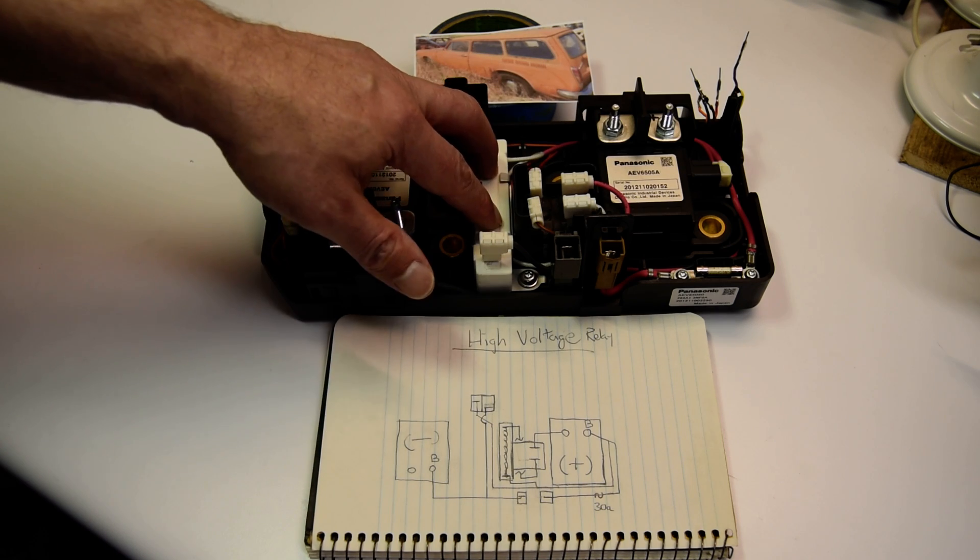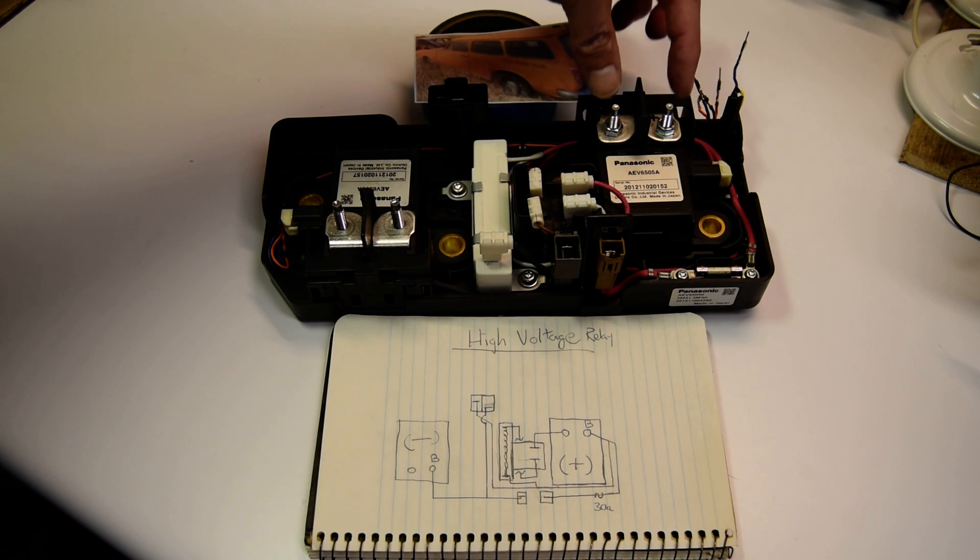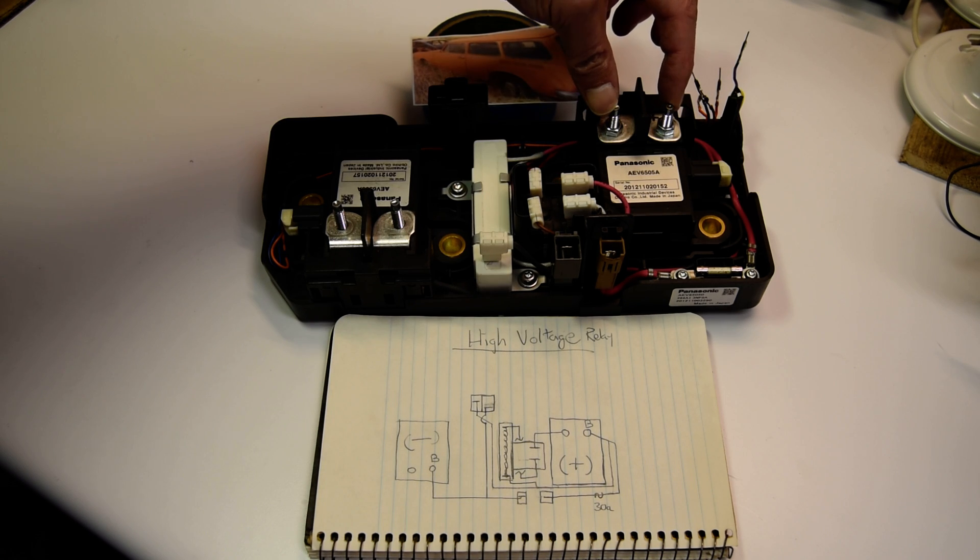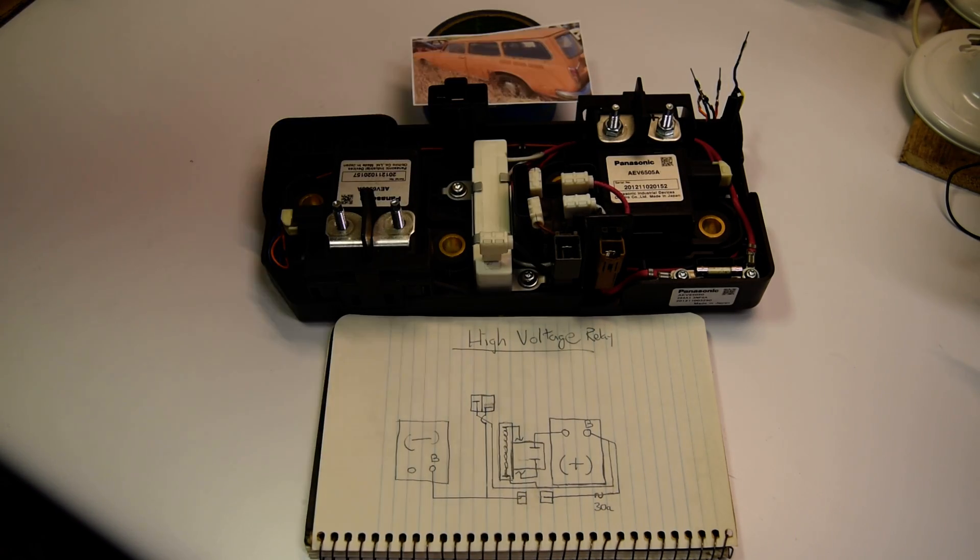This resistor is essentially between these two terminals here. The wiring is a little convoluted, they wrap it around. One thing I've noticed between Toyota and Nissan, having some Nissan parts and having some Toyota parts, Toyota 100 percent. It's easy to understand the way they lay things out, but you know, to each their own.